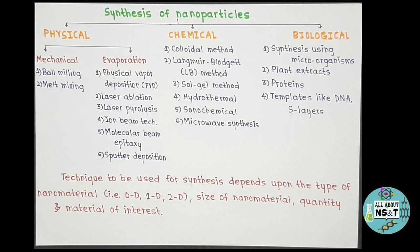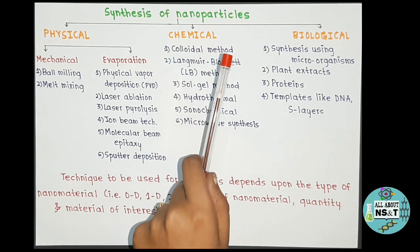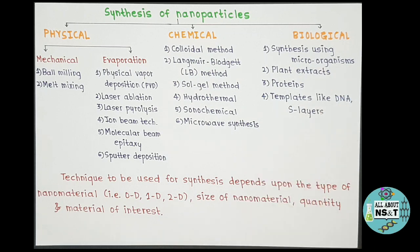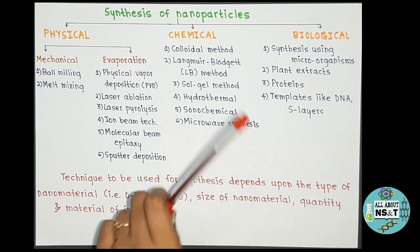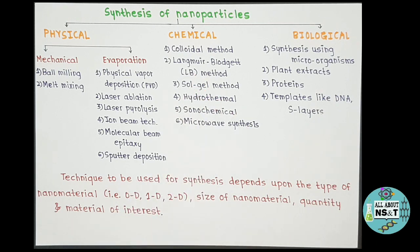If your aim is to produce a large amount of nanoparticles — a larger yield — you will have to go with the chemical route, because with biological routes large-scale production is not possible. If you are looking for an eco-friendly or cheaper way to synthesize nanoparticles, then you should go with biological methods, because chemical and physical routes have issues of toxicity and are not eco-friendly.